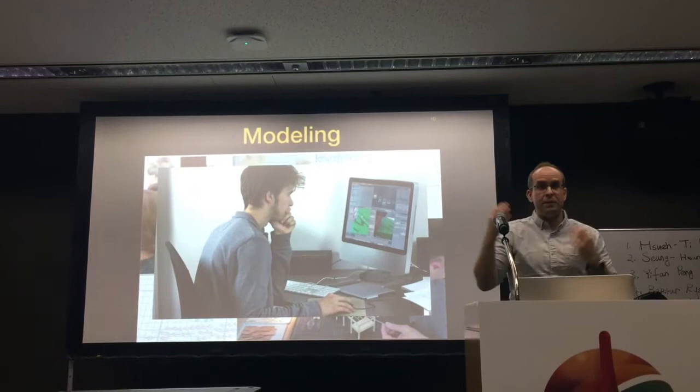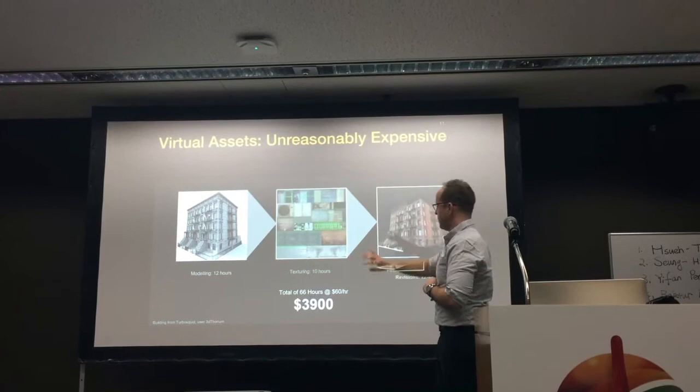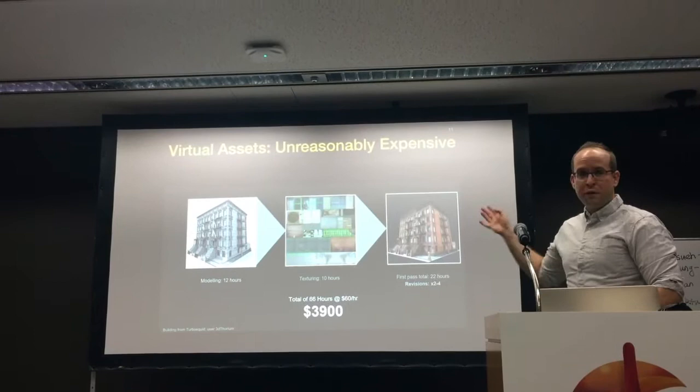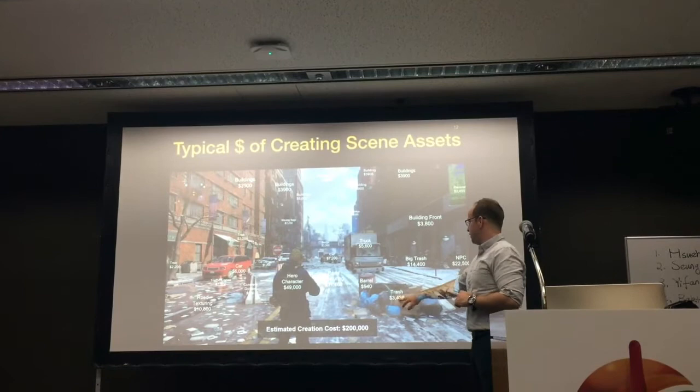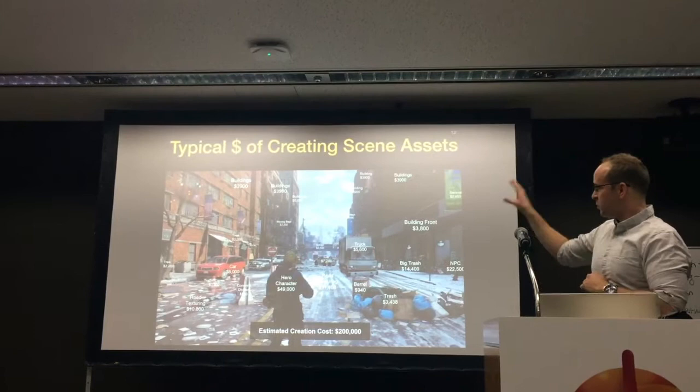To put a number on this effort — say designing a building takes 12 hours, texturing another 10 hours, final pass 22 hours — that can be maybe $3,900 in salary for an artist creating your game. Extrapolating these costs across an entire scene: a trash can costs $3,500, a traffic crash $5,000, a building $6,000. So an entire scene might cost $200,000 just to create. This puts numbers on the effort it takes to create a good-looking game.